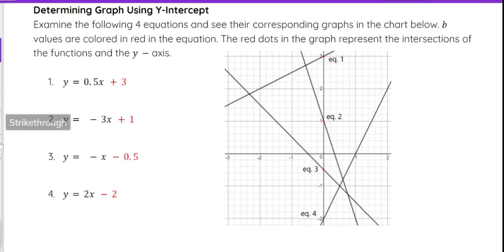So let's take a look at these four equations. We have four equations graphed here, number 1, 2, 3, and 4, and they are labeled equation 1, equation 2, 3, and 4. And you see the point in red, that is your y-intercept.